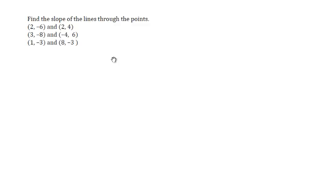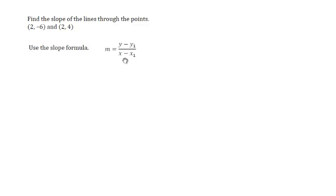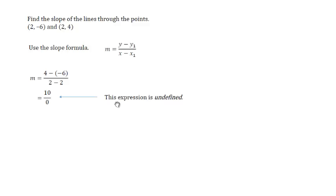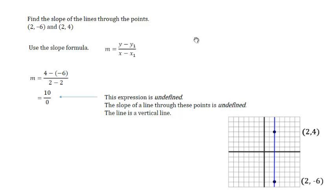Find the slope of lines through the points (2, negative 6) and (2, 4). Using the slope formula, m equals y₂ minus y₁ over x₂ minus x₁: that's 4 minus negative 6 over 2 minus 2. In the numerator, 4 minus negative 6 is 4 plus 6, or 10, but in the denominator 2 minus 2 is 0. This expression is undefined. The slope of a line through these points is undefined — that means you have a vertical line, and the slope of a vertical line is always undefined.